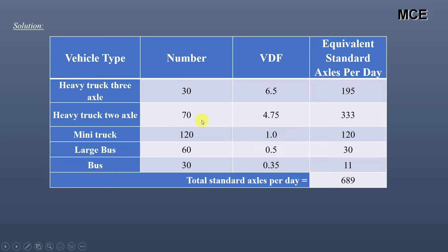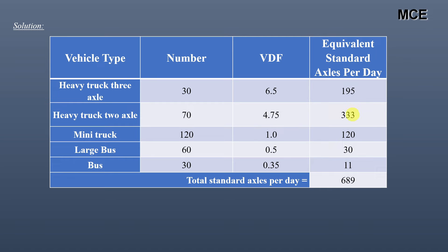Similarly, for Heavy Truck 2 Axle, VDF is 4.75, so 70 × 4.75 = 332.5 ≈ 333 equivalent standard axles. For Mini Truck, VDF is 1.0, so 120 × 1 = 120. For Large Bus, VDF is 0.5, so 60 × 0.5 = 30. For Bus, VDF is 0.35, so 30 × 0.35 = 11 equivalent standard axles per day. The total is 689 equivalent standard axles per day — the initial standard number of axles for this road.